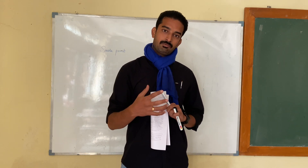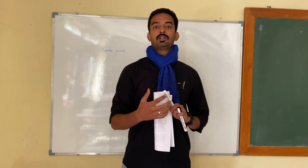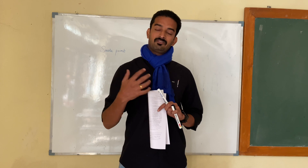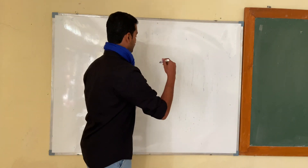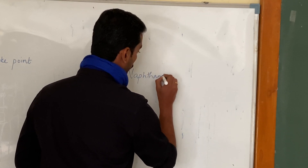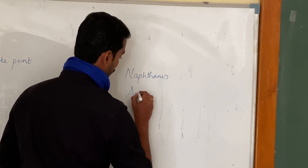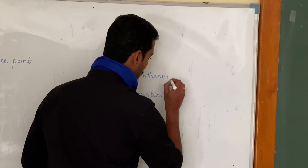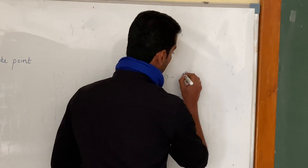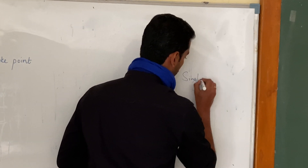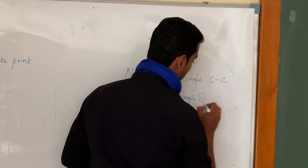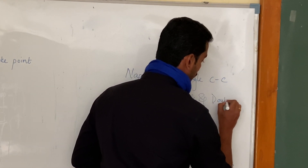The main components we discuss in the context of smoke point are paraffins, naphthenes, and aromatics. The important structural difference is that naphthenes contain only single bonds, whereas in aromatics, both single bonds and double bonds are present.